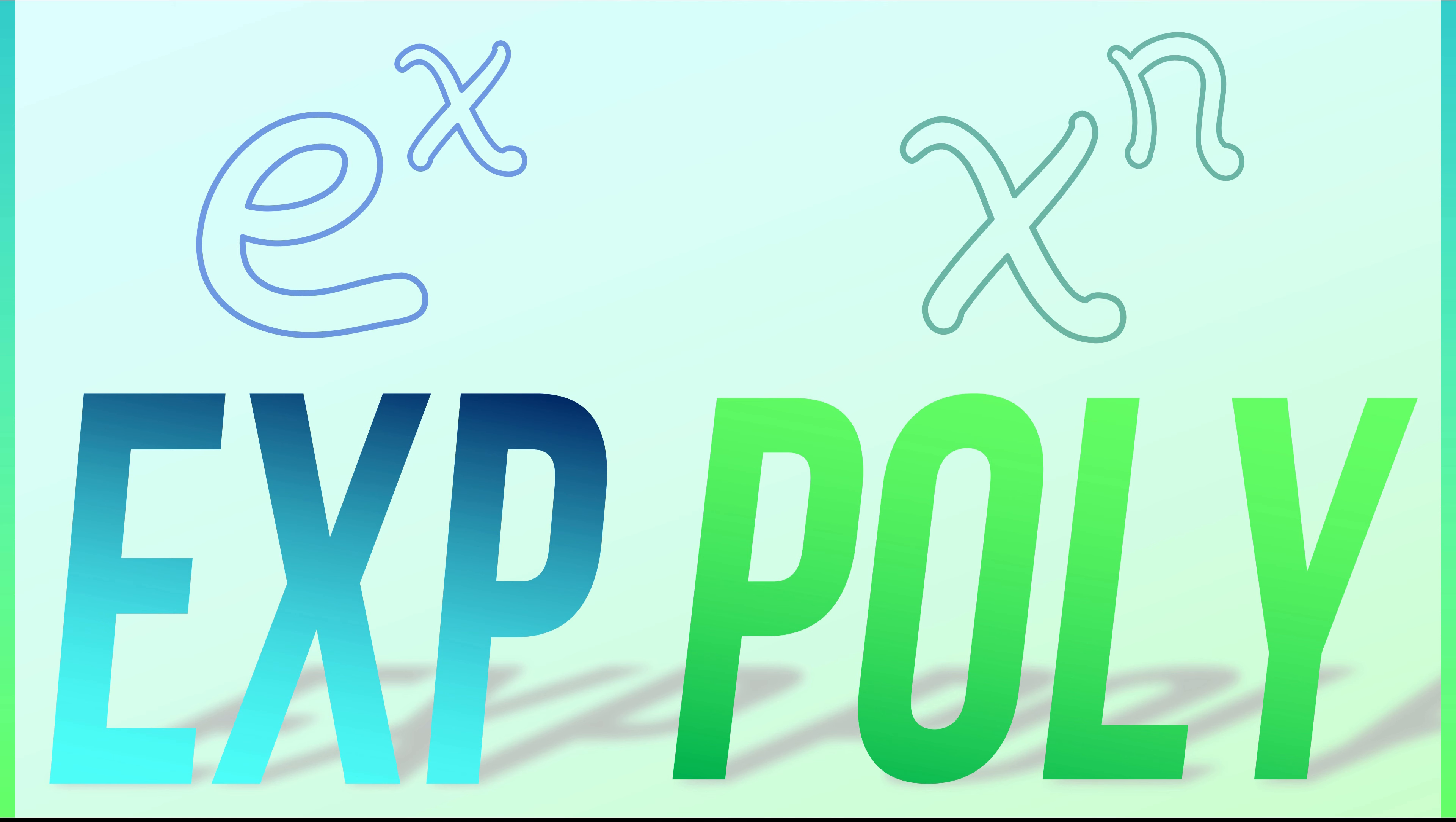Well, it seems kind of obvious that e to the x grows much faster than x to the n for any value of n. But how do you quantify that? How do you make that more precise? It's not enough simply to note that e to the x is bigger than x to the n. I want richer information than that.